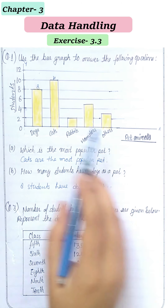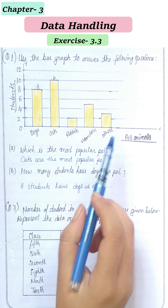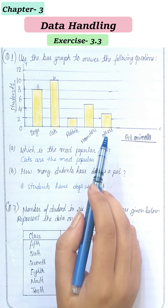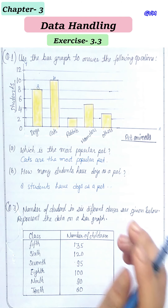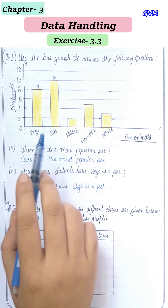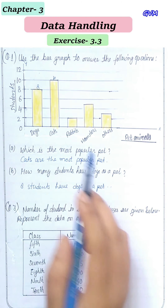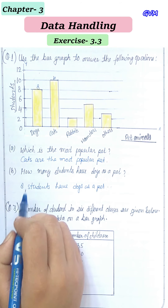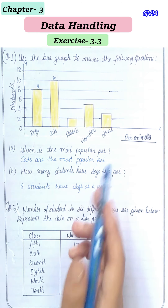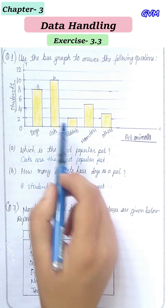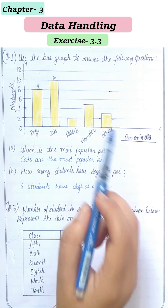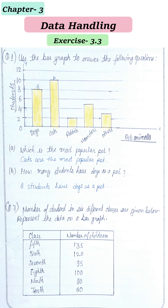This was the first question — the bar graph shows the pets liked and owned by the students, and we answered according to the questions. Question number 2 is similar to question number 1; you can solve it on your own.